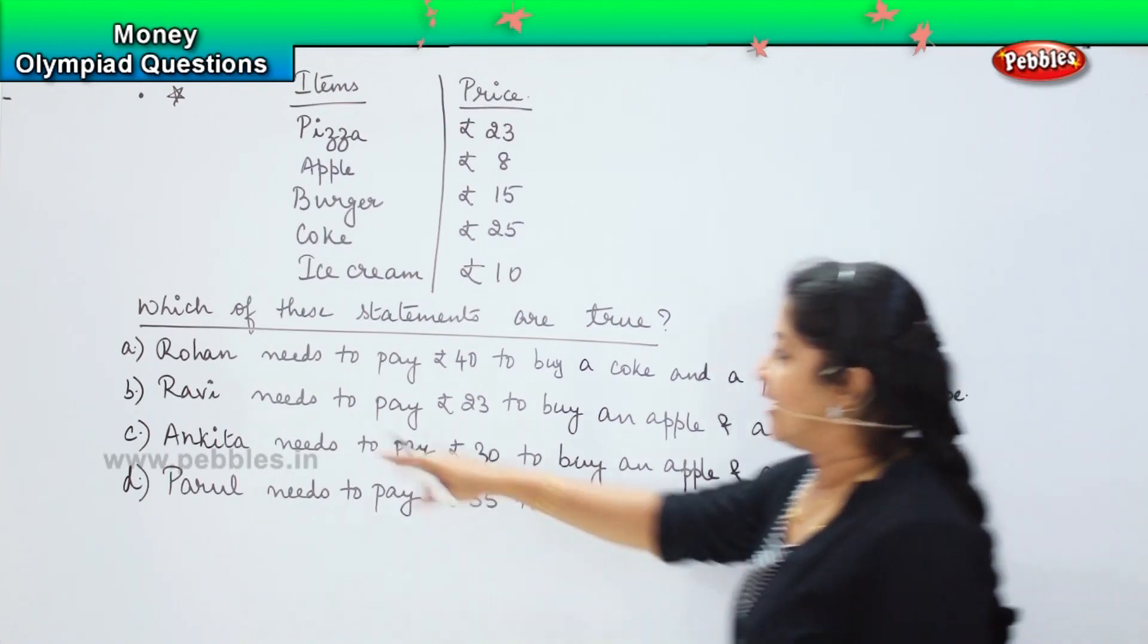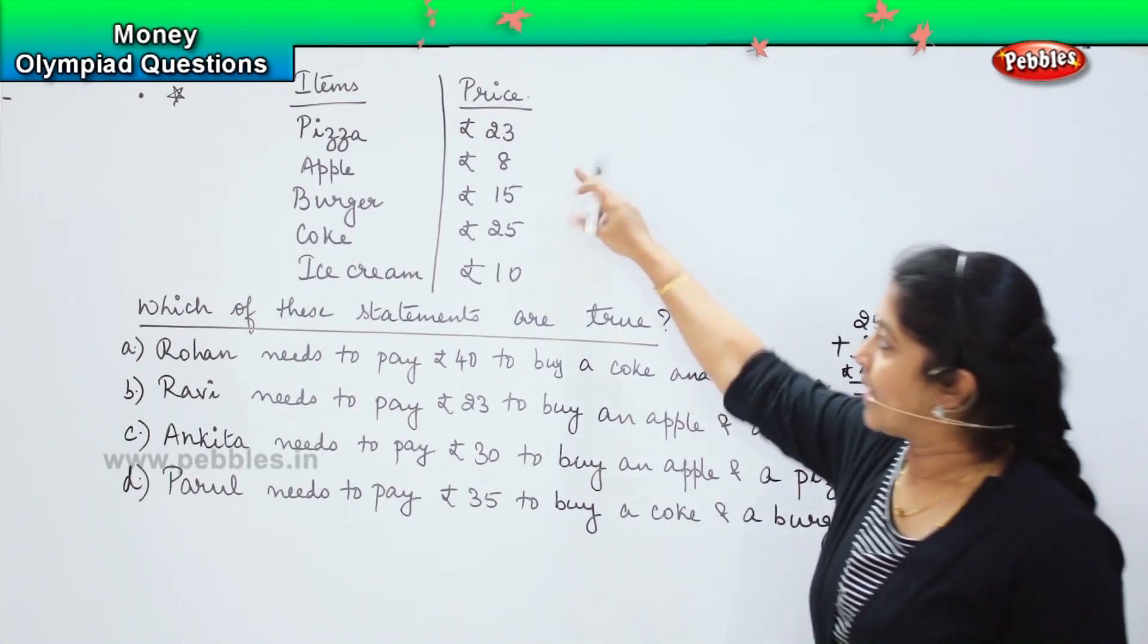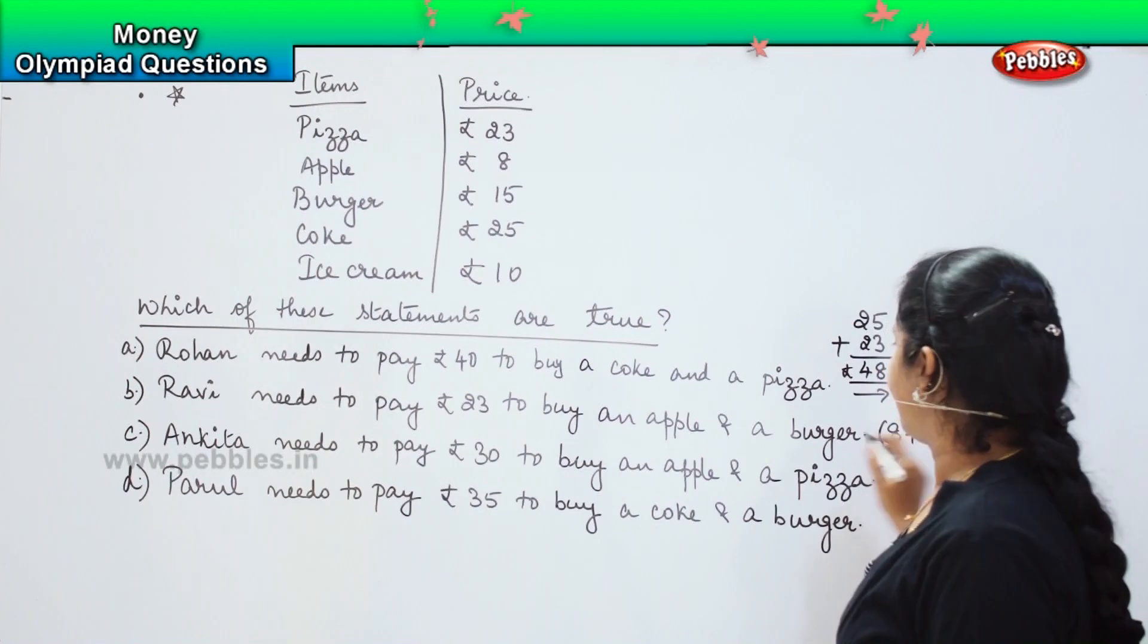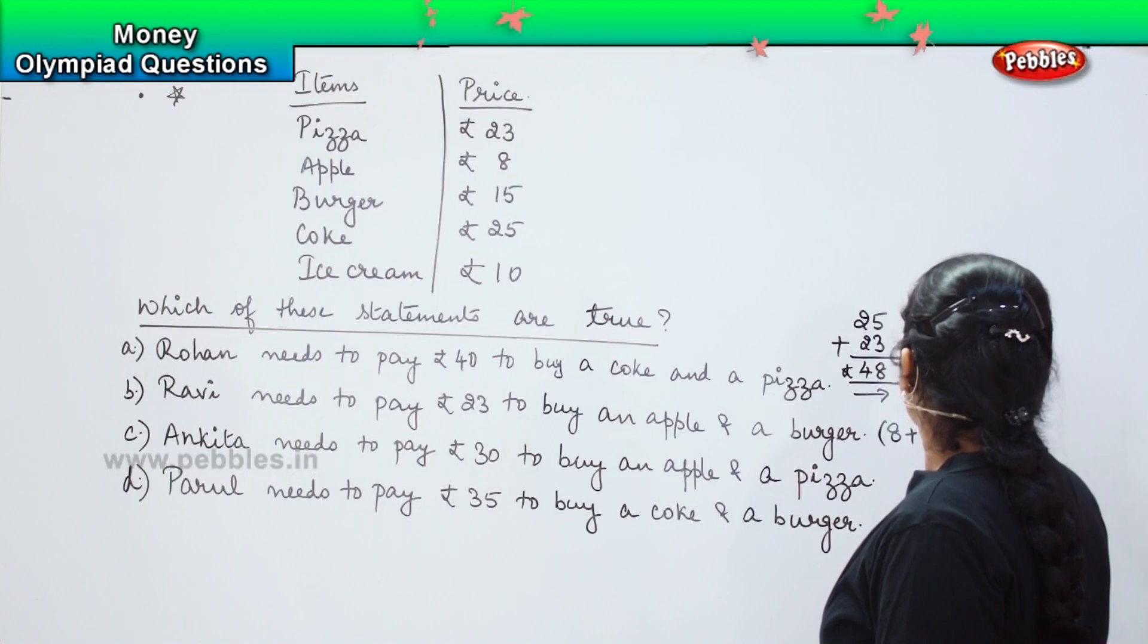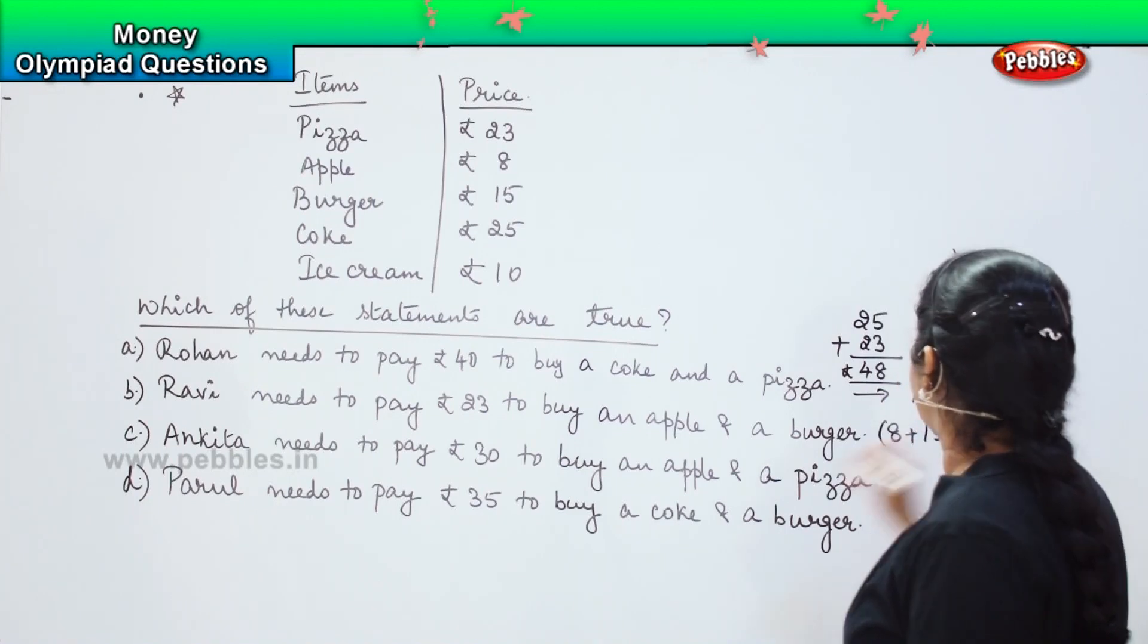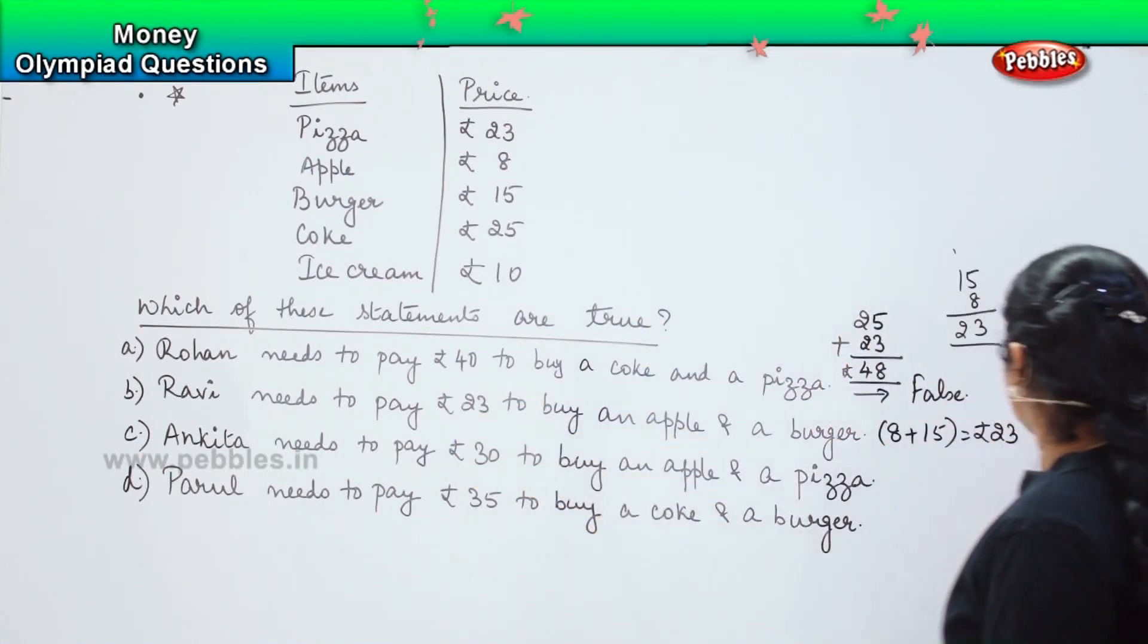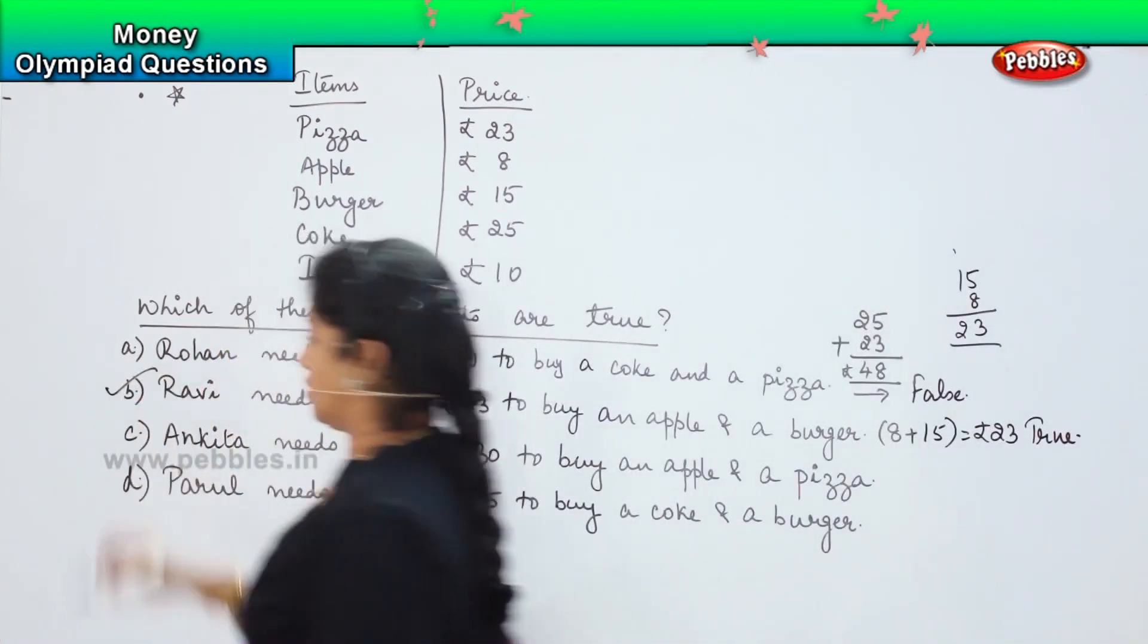Next one, Ravi needs to pay 23 rupees to buy an apple and a burger. So, what is the cost of an apple? The apple is 8 rupees and the cost of the burger is 15, right. So, 15 plus 8. 5 plus 8 is 13, 1 plus 1 is 2. So, which means that it costs 23 rupees. And what is the question asking? Yes. So, this is a true statement. Option B is the true statement.